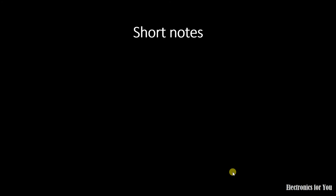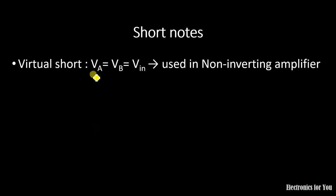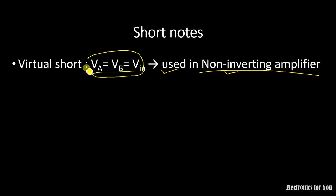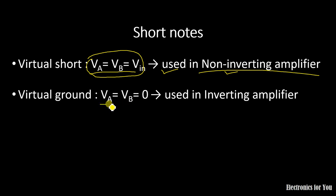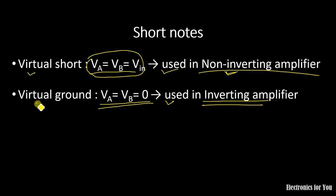In summary, the virtual short concept gives Va equal to Vb equal to Vin, and it is extensively used in non-inverting amplifiers. The virtual ground concept gives Va equal to Vb equal to 0, and it is extensively used in inverting amplifiers. One should note: virtual short is used in non-inverting amplifiers, and virtual ground is used in inverting amplifiers.